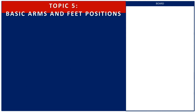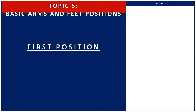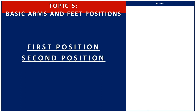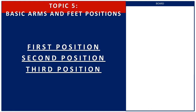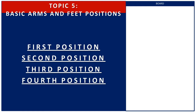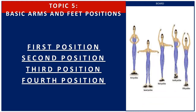Let us now proceed to Topic 5, which is about the basic arms and feet positions. First position: bring heels close to touch, toes apart. Second position: bring feet apart sideward. Third position: bring the heel of one foot to touch the instep of the other foot. Fourth position: bring one foot in front of the other foot to walk strike, like what we have in the example picture.